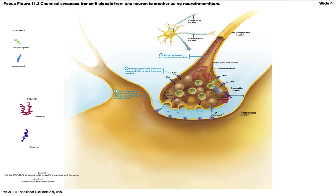The big picture is that we have vesicles filled with neurotransmitters, and these neurotransmitters need to be released into the synaptic cleft. This happens because of SNARE proteins. There are four proteins we're going to look at which are responsible for this process.